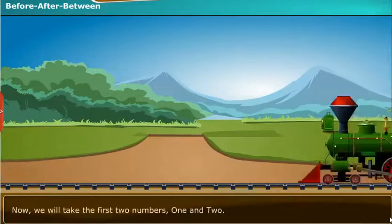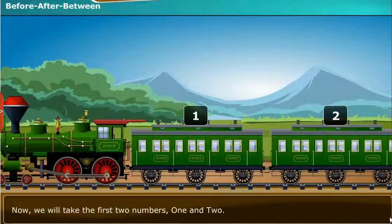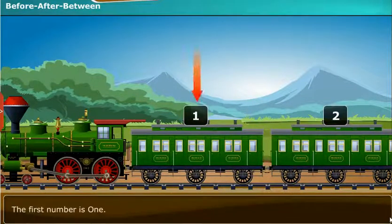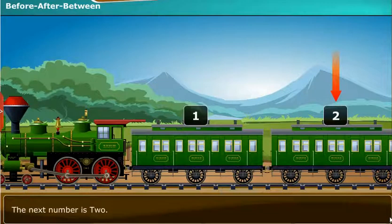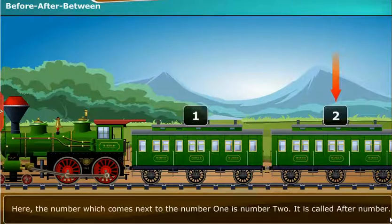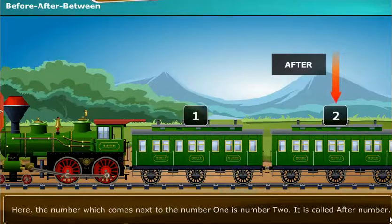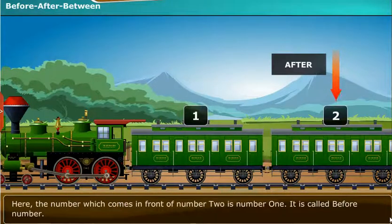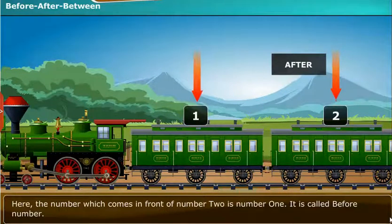Now we will take the first two numbers, 1 and 2. The first number is 1 and the next number is 2. The number which comes next to number 1 is number 2 — it is called the after number. The number which comes in front of number 2 is number 1 — it is called the before number.